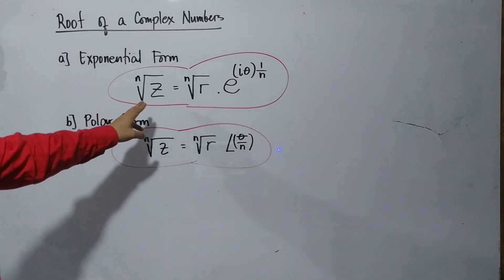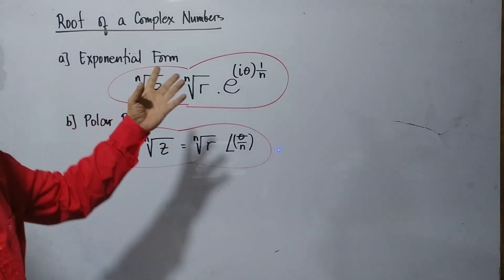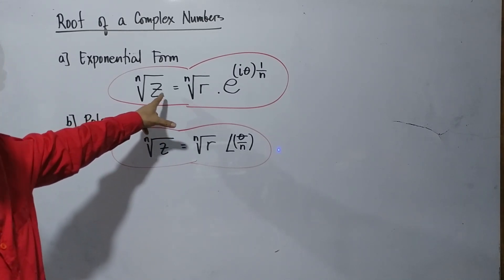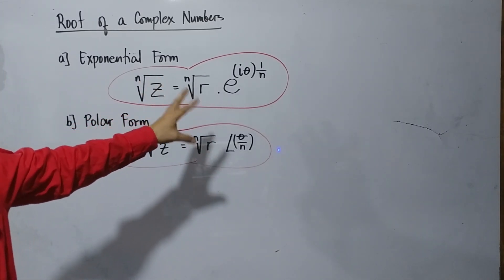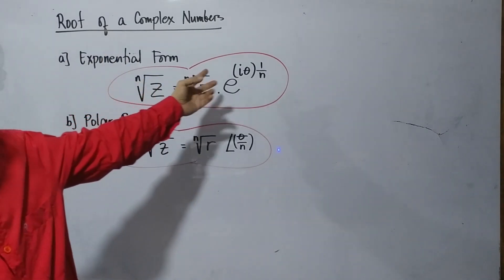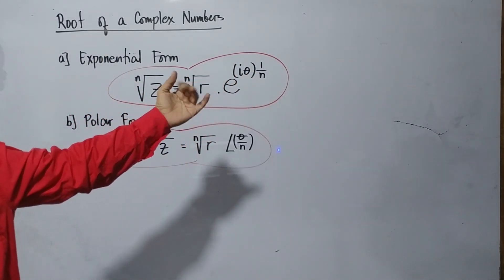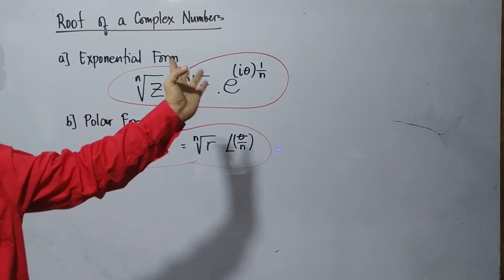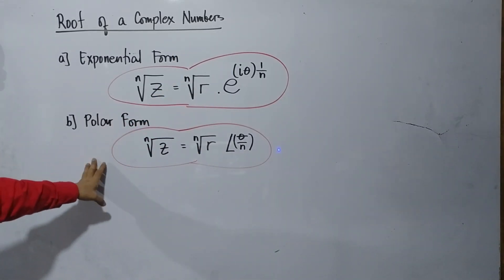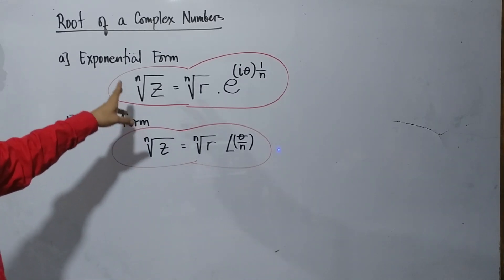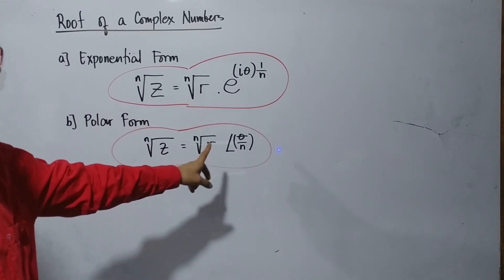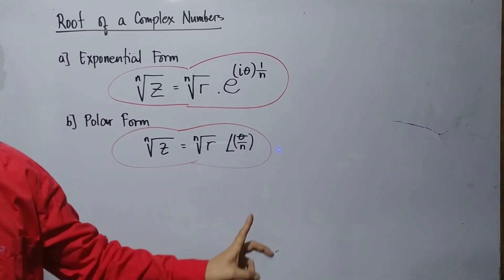As you notice, when it is not in root form, our formula for exponential form is z equals r times e to the i·theta. For the exponential root form, you just add the root — it could be square root, cube root, 4th root, or any root. For the polar form, the same applies: when not in root form, z equals r times the angle of theta.